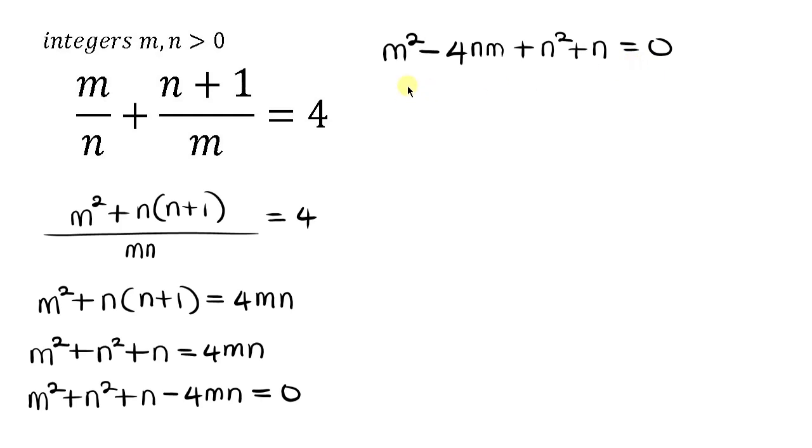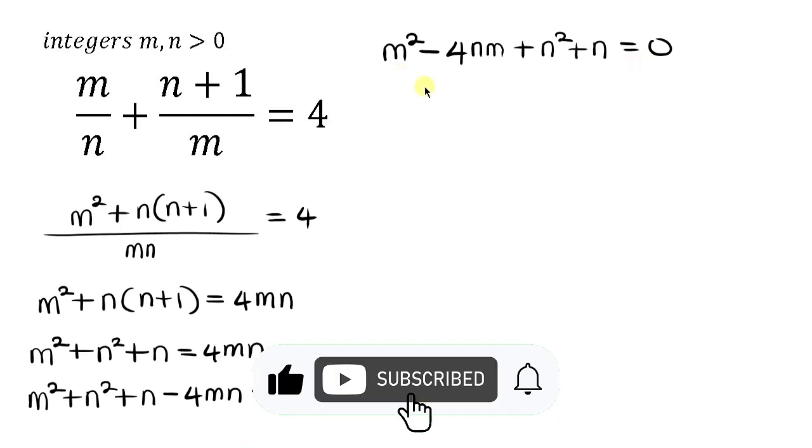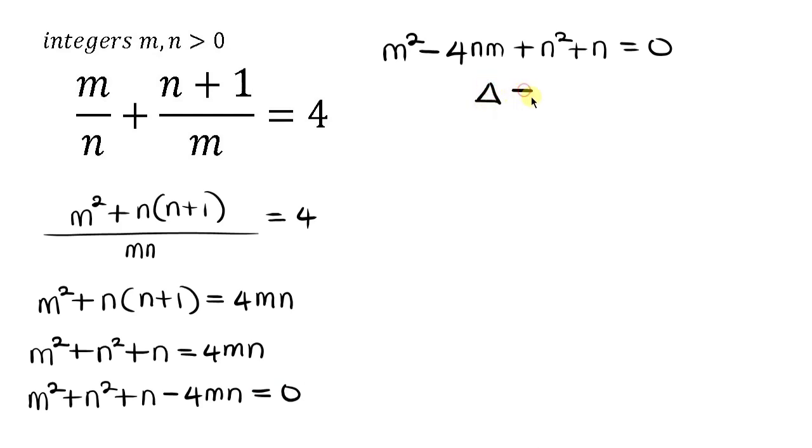Now for us to have an integer solution of m, the discriminant must be a perfect square. And what is the formula for discriminant? It is actually b² - 4ac. And like we said, the discriminant for this equation must be a perfect square in order for us to have an integer solution for m.